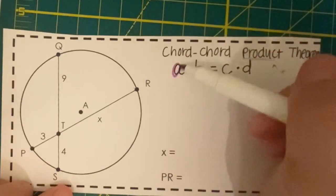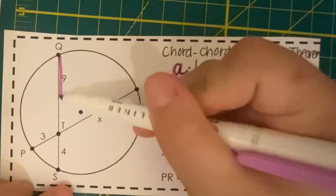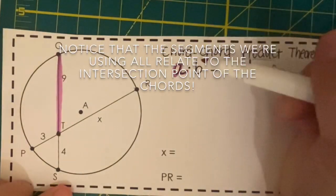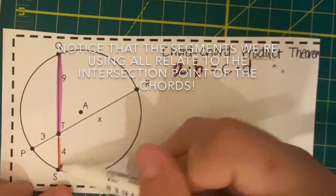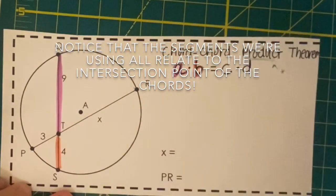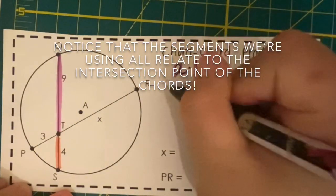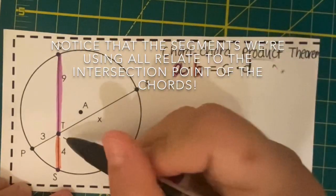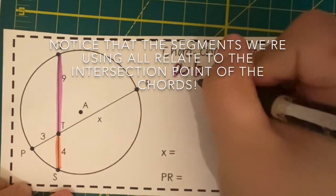These are pieces of the chords. A and B are going to be the two chunks of chord QS. So A is actually segment QT, and B is actually segment TS.